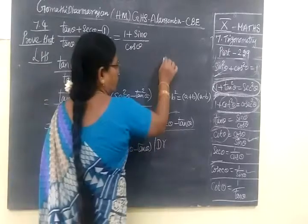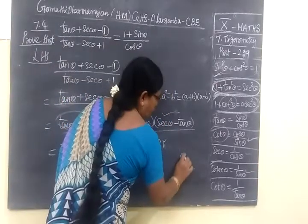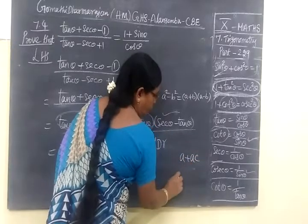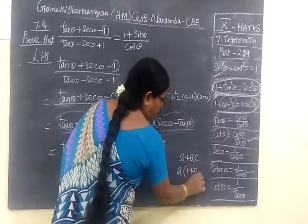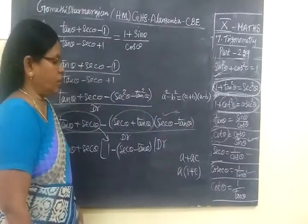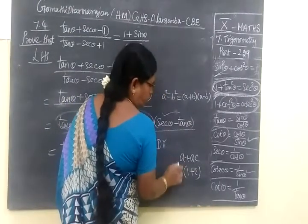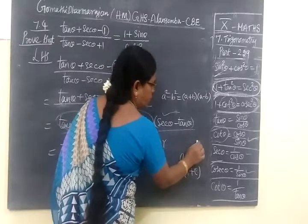Suppose, for example, you are taking A common. That is 1 + C. This is C, this is A. A is A.